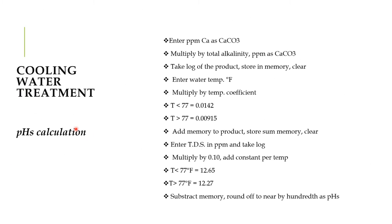For pH saturation (pHs) calculation: enter calcium hardness in ppm as CaCO3, multiply by total alkalinity in ppm as CaCO3, and take the log of the product. Enter water temperature in degrees Fahrenheit — multiply by 0.0142 if less than 77°F, or 0.009 if greater than 77°F. Add both values. Enter TDS in ppm and take its log. For temperature correction, multiply by 12.65 if less than 77°F, or 12.27 if greater than 77°F. Round up the result to get the pHs.